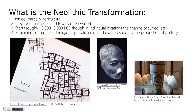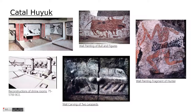Çatalhöyük was built in an unusual fashion — the town had no streets. All the houses are built up against each other so that the only way someone could get into any individual house is through the roof. There are no doors and no roads. That actually made for a very unusual means of self-defense, because anyone who might attack this community would have to invade each house separately, diving down into a dark room not knowing who might be waiting for them.